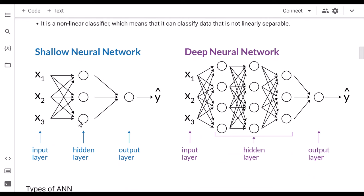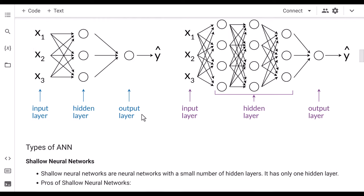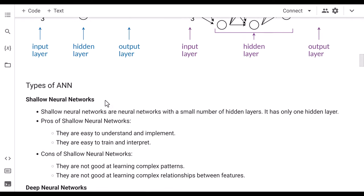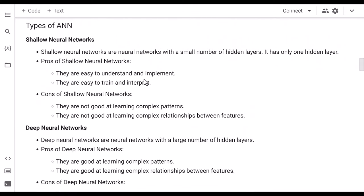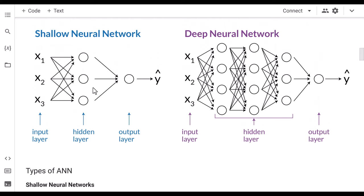In a shallow neural network we have only one hidden layer, while in a deep neural network we have multiple hidden layers. In all cases there is one input layer and one output layer, and the number of neurons in each depends on your problem. Shallow neural networks are easy to build and learn, but cannot learn complex patterns. Deep neural networks are more complex and difficult to build, but they can learn complex patterns.